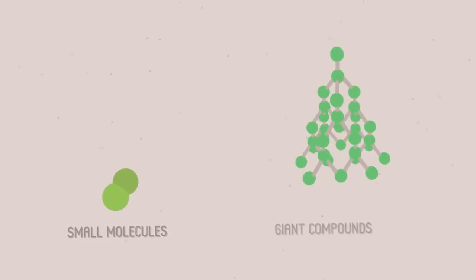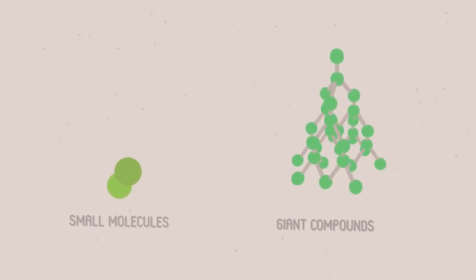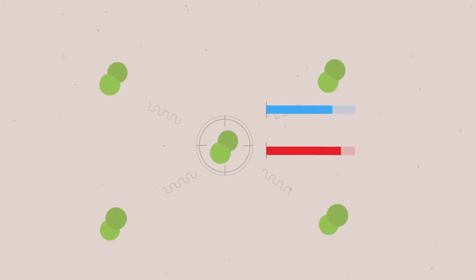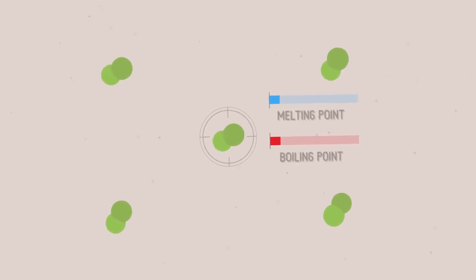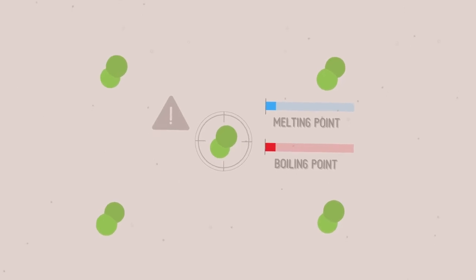There are two kinds of covalent structure. Small molecules, like water, and giant compounds, like diamond. Because the electrons in the bonds are evenly shared, bonds are not polarised. There is little attraction between molecules, and forces between molecules are weak. Compounds made from small covalent molecules have low melting and boiling points, and are volatile. They also don't conduct electricity.